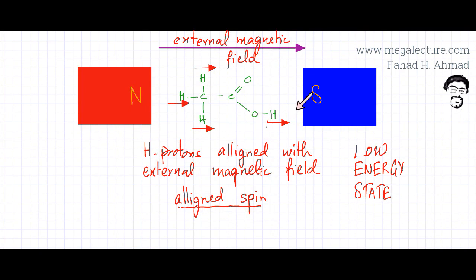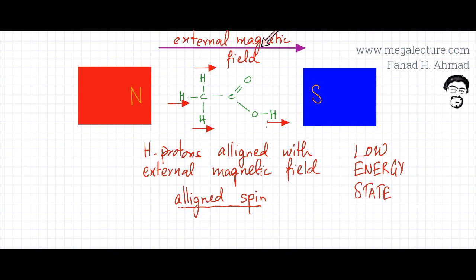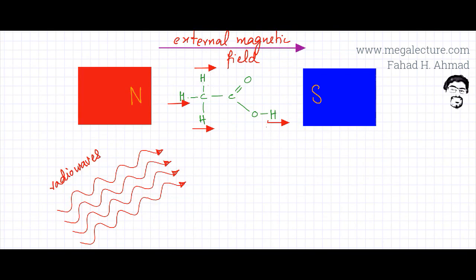Just like the compass needle, I'm now going to force these hydrogen protons to point in the opposite direction — the opposing spin. This is the low-energy state, and the only way to force them into opposing spin is by giving them energy, by making these hydrogen protons energetic. If they have low energy, they always align with the external magnetic field. But if they are given enough energy, they can go into opposing spin and start resonating.